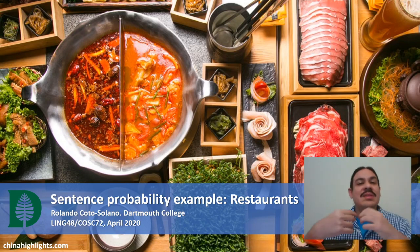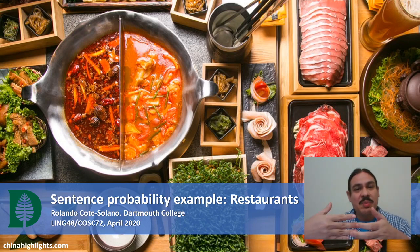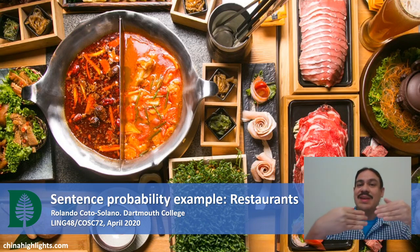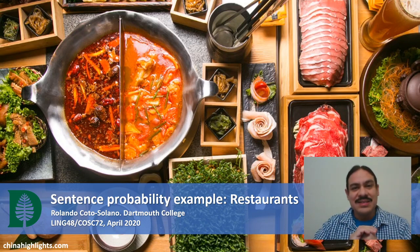In the last video we looked at the probabilities of bigrams and how we can use those probabilities to estimate the probabilities of a whole sentence. We also saw how these probabilities can help us distinguish between a good English sentence and an ungrammatical English sentence.